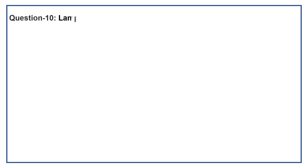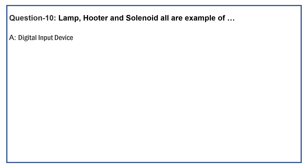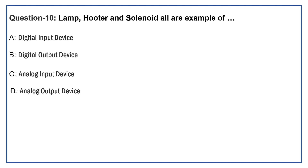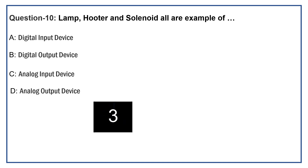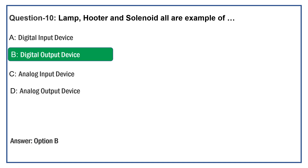Lamps, hooters, and solenoids are all examples of — Option A: Digital Input Device. Option B: Digital Output Device. Option C: Analog Input Device. Option D: Analog Output Device. The right answer is Option B: Digital Output Device. Lamps, hooters, and solenoids are all examples of digital output devices.